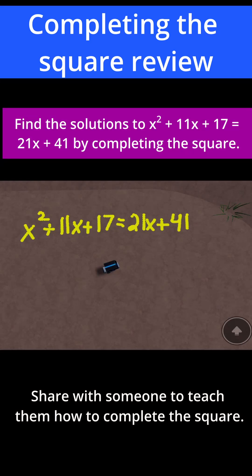In this problem, we have that x squared plus 11x plus 17 is equal to 21x plus 41. The first thing we're going to do is rearrange the terms to get the x terms on the left side and move the numbers to the right side.